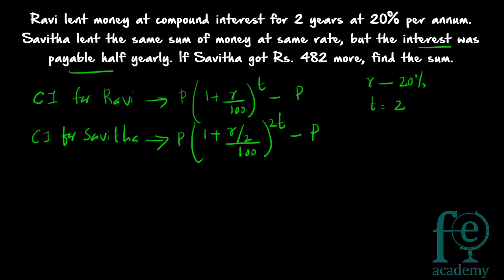Suppose the question is compounded quarterly or the interest is payable quarterly — how will the formula change? The formula will become: P × (1 + (R/4)/100)^(4T) − P. Likewise, if every 3 months it is compounded, it becomes: P × (1 + (R/3)/100)^(3T) − P. So it goes on changing accordingly.